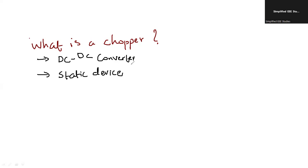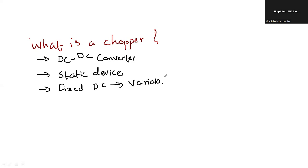Using the chopper, the fixed DC is going to be converted into variable DC. That is another peculiarity of a DC-DC chopper.